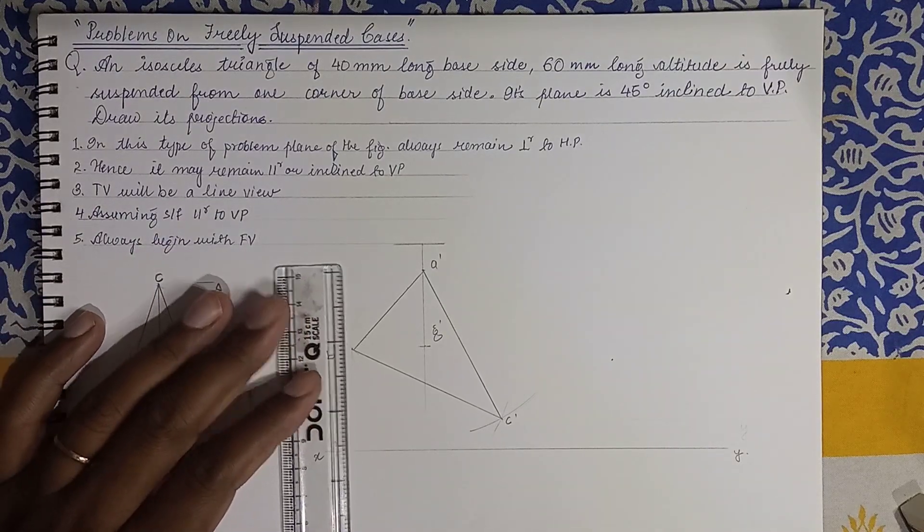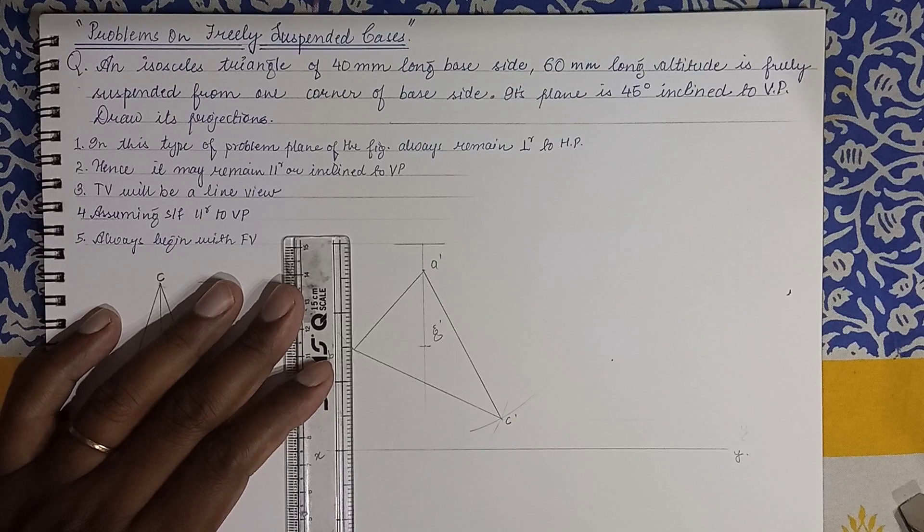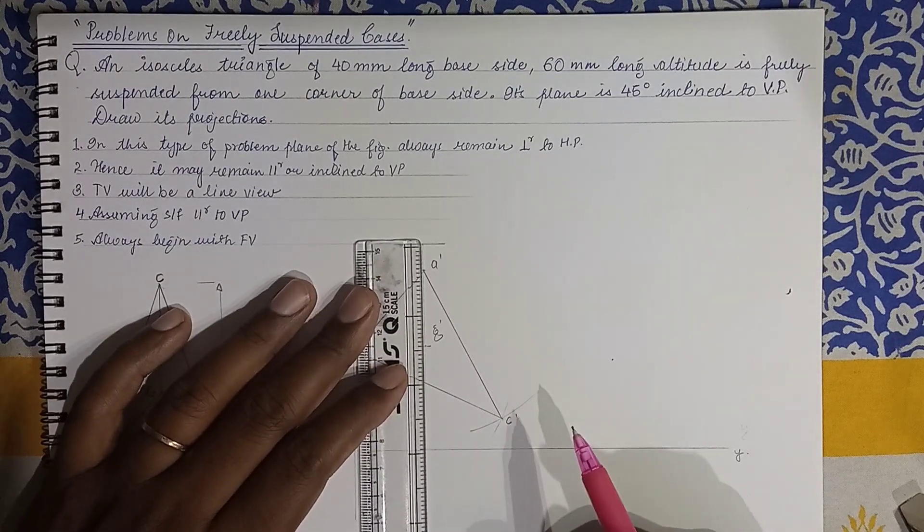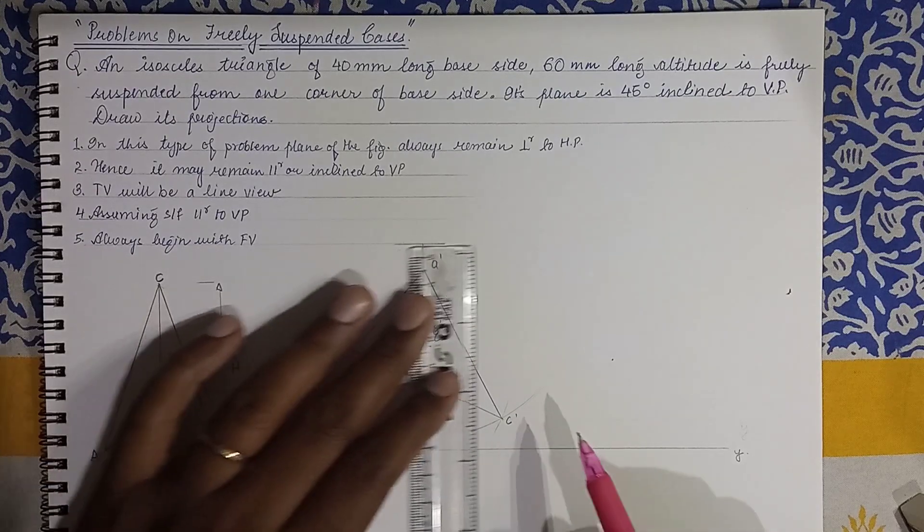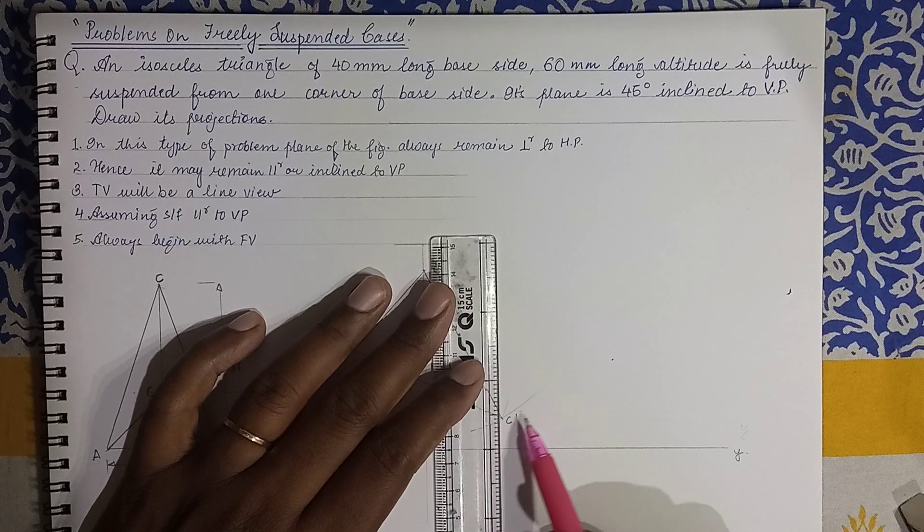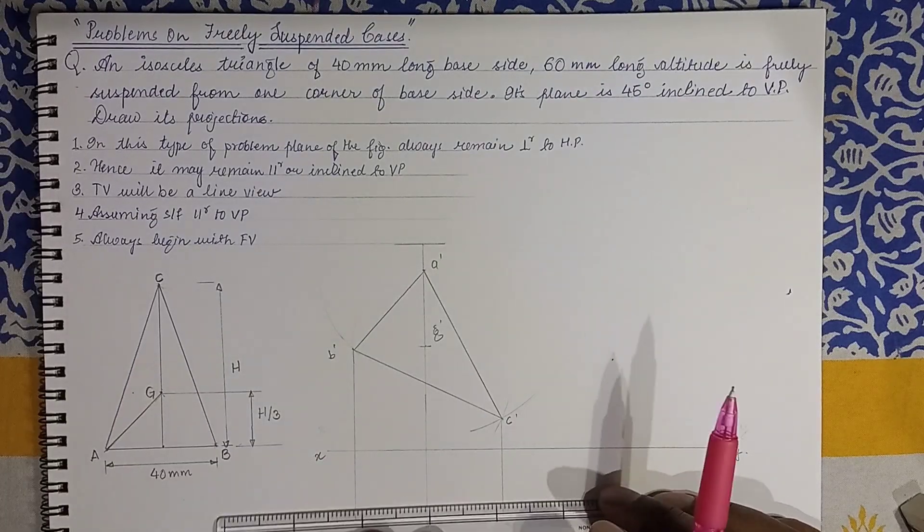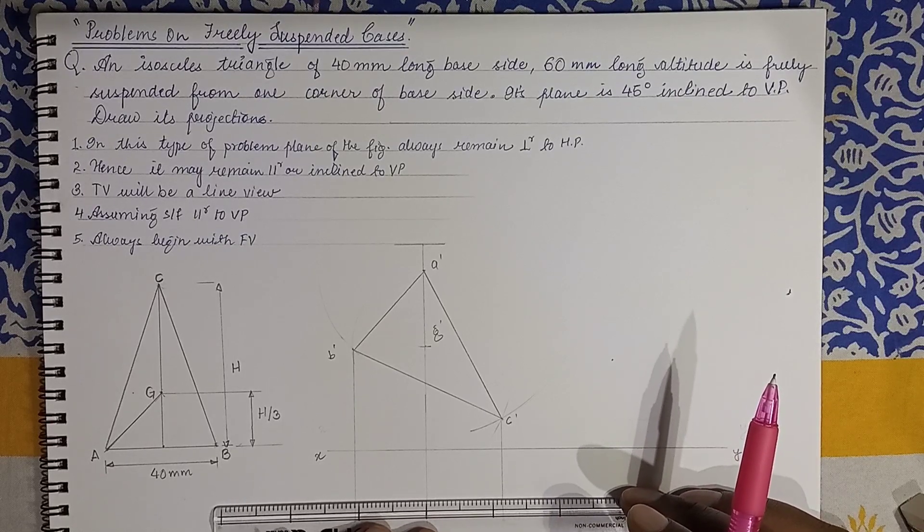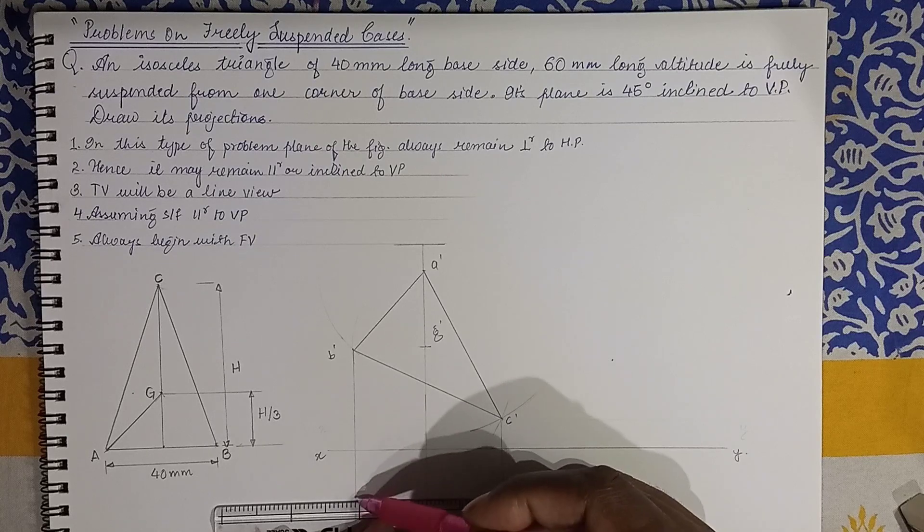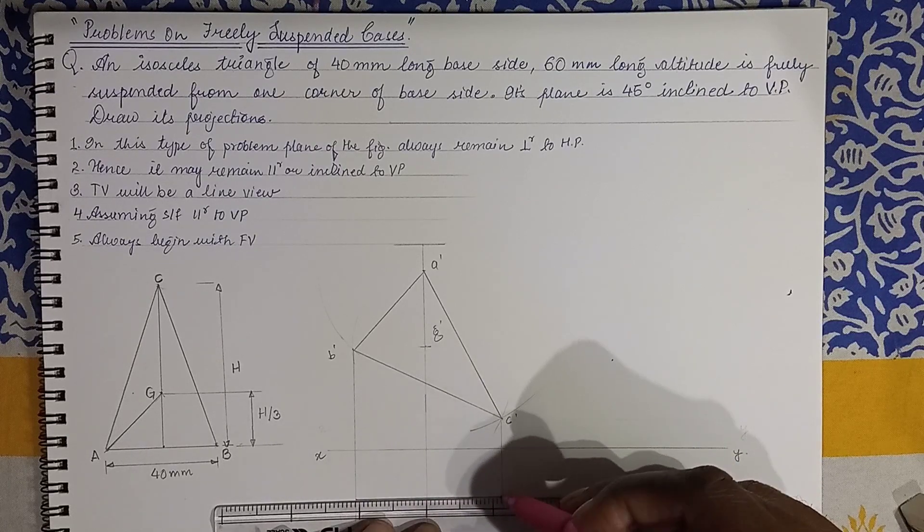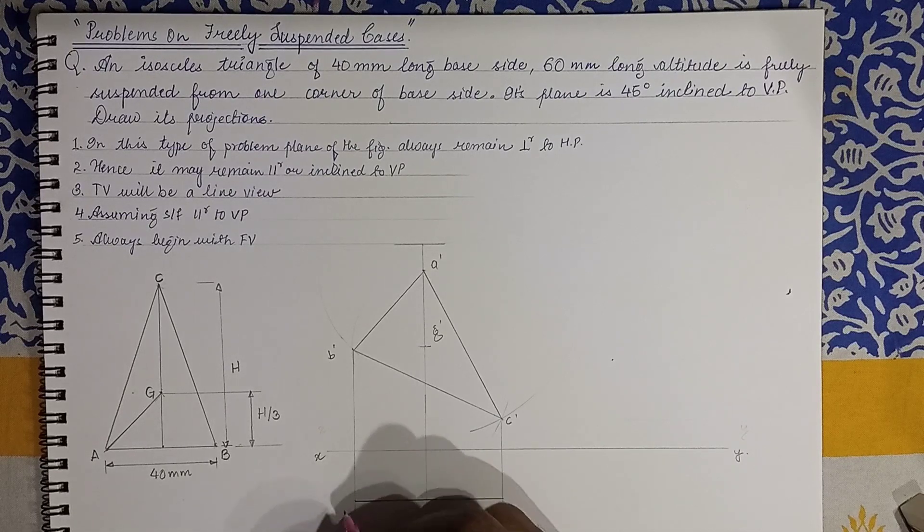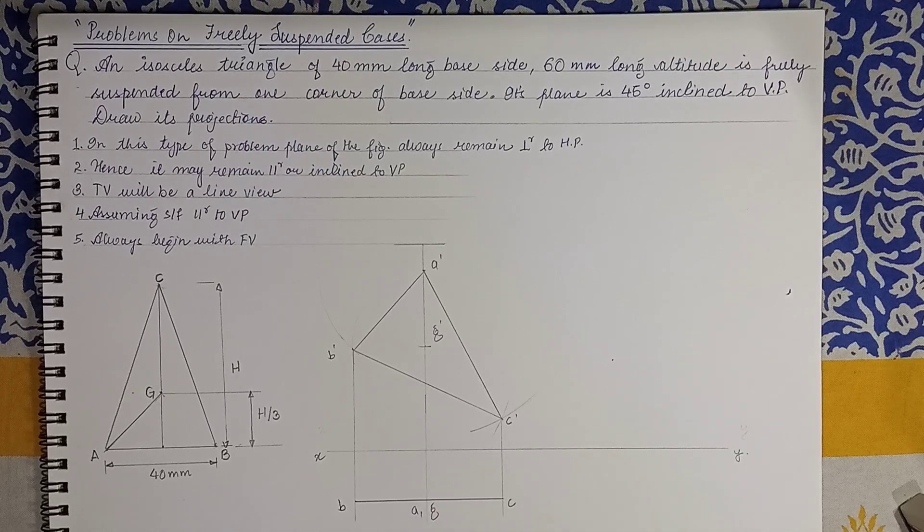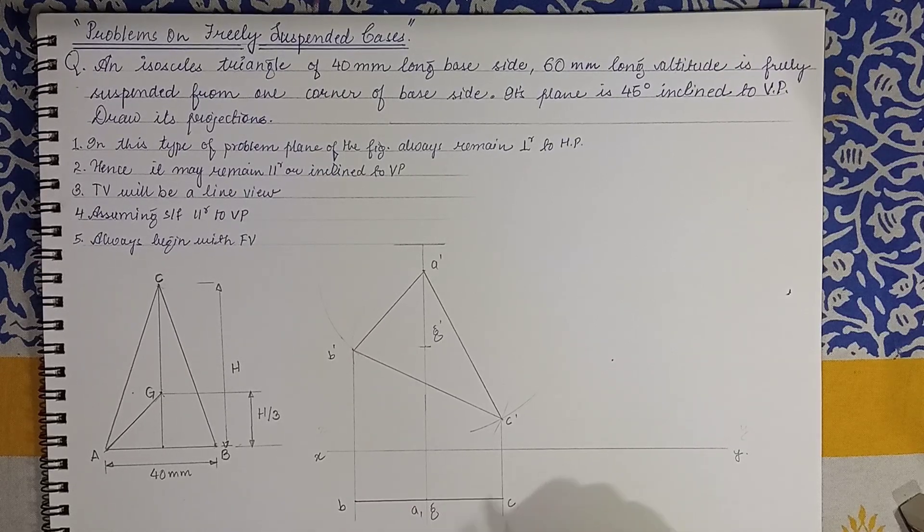Now this is suspended and we project and we get the points. When the observer is looking from the top we get the line view. So it is a line that is obtained. Take a suitable distance and we can draw the line over here.